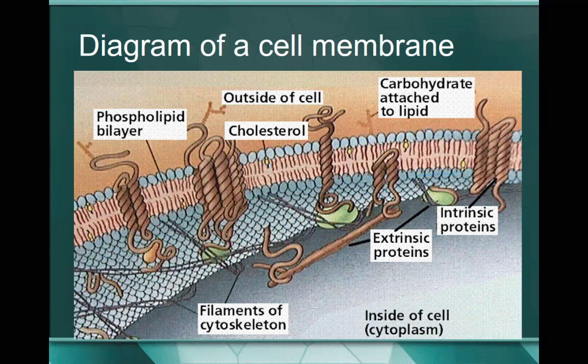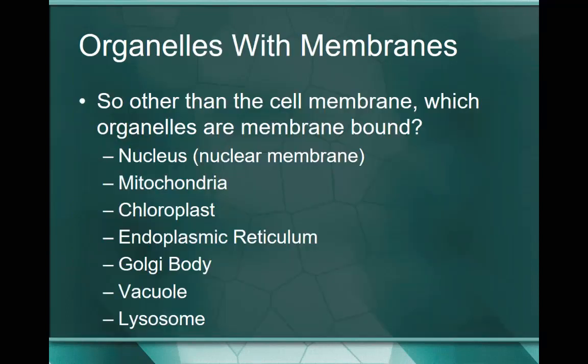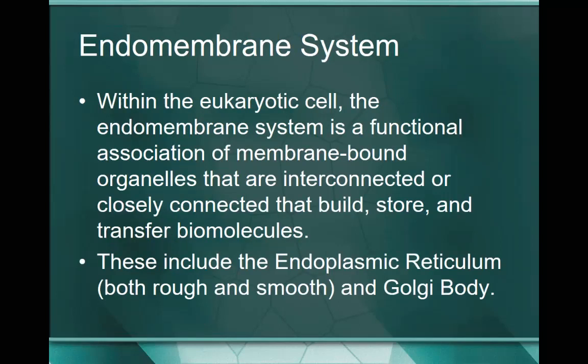What kinds of things have membranes? The nucleus has a membrane called the nuclear membrane; the mitochondria, the chloroplast, endoplasmic reticulum, Golgi body, vacuoles, and lysosomes - all of these organelles are bound within membranes. In fact, within the eukaryotic cell we have what's known as the endomembrane system - a functional association between several of these membrane-bound organelles that work together to build, store, and transfer biomolecules, specifically proteins.